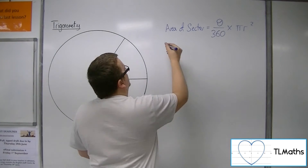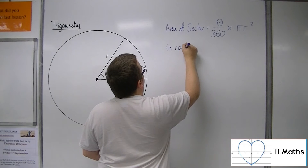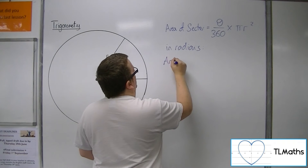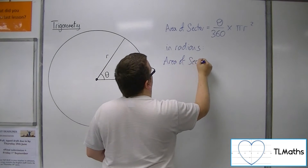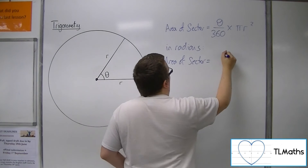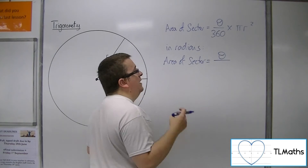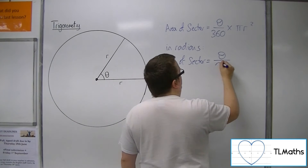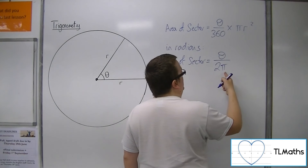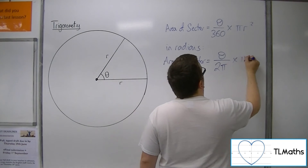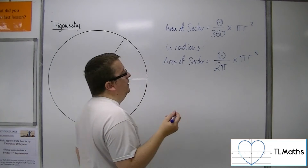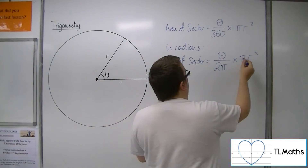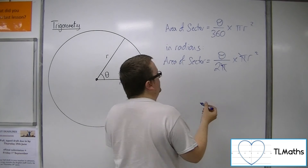So if I convert that into radians, then the area of a sector will be equal to whatever angle I have in radians, divided by 2π — because that's 360 in radians — times by π r squared. In this formula, I have a dividing by π and a multiplying by π, so they cancel.